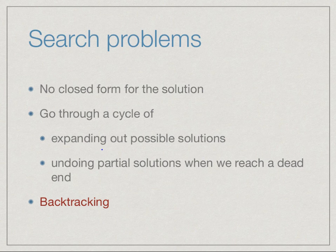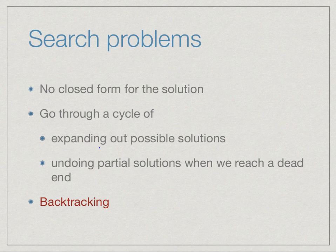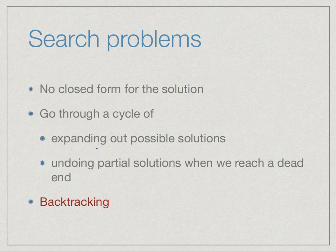In general, the class of problems for which infinite list technology is useful are so-called search problems. We have a space of solutions we can generate, and we are looking for a solution with a required property. The general strategy is to keep expanding solutions; when we find what we are looking for we stop, or if a partial solution has no further expansions we go back and try another. This general strategy is called backtracking.